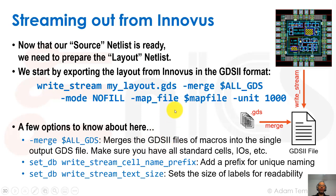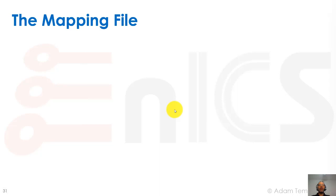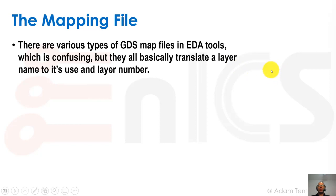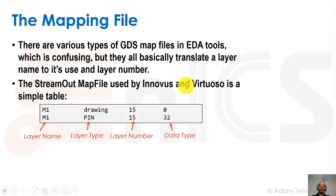That was pretty straightforward. One thing I mentioned is that there's a mapping file. There are various types of GDS map files in EDA tools — that's really confusing — but basically all they do is translate a layer name to its use and layer number. These different map files are a list of the name in one tool and the GDS number. GDS uses a number for a layer, not a name. There's also something called a type or usage.